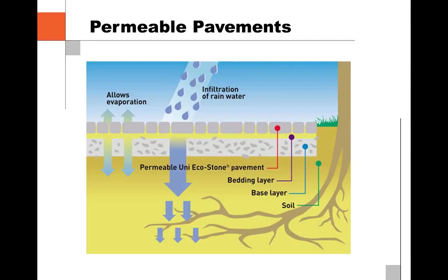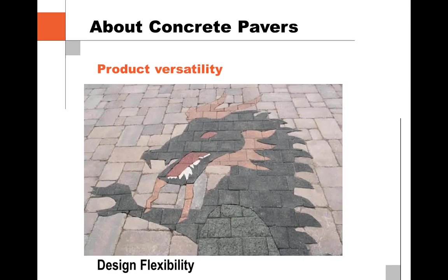Conceptually, permeable pavement works by having rainwater come down, land on the surface, and flow through gaps between paver units or openings in a porous system, getting back down into the ground and providing moisture and oxygen for plant material. A lot of times people use permeable pavement because the stone layer underneath the pavers can be used for detention — storing water for a period of time and allowing it to naturally infiltrate back into the ground. This depends on what kind of soil conditions you have.